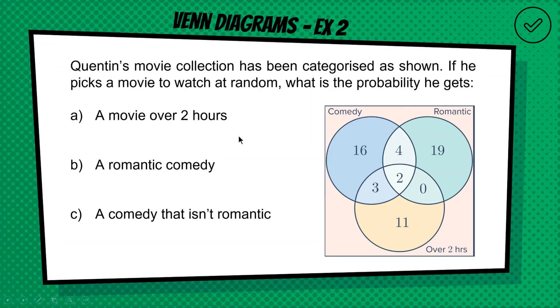Okay, if he picked a movie at random from his collection, what is the probability he ends up with a movie over two hours? So if we picked a random movie, what are the chances we end up in this circle here, over two hours? Well, to figure this out, first thing we need to know is how many movies Quentin has in total. So if we add up all these numbers, and if I did it correctly, we should get 55. So now we've got to ask ourselves, out of our 55 movies, how many of these are over two hours? Well, it's everything in this circle here. So it's the 11, the 3, and the 2, and the 0, I guess. So we've got 2 plus 3 plus 11 is 16. So our probability is 16 out of 55.